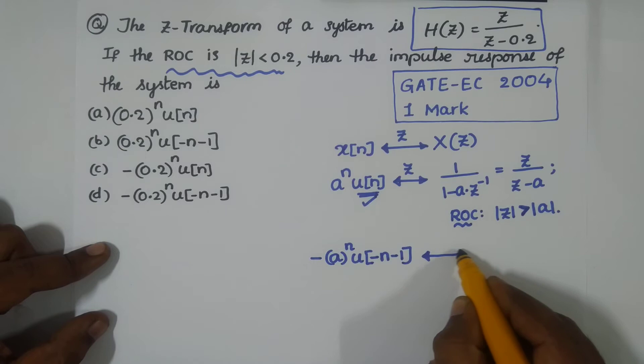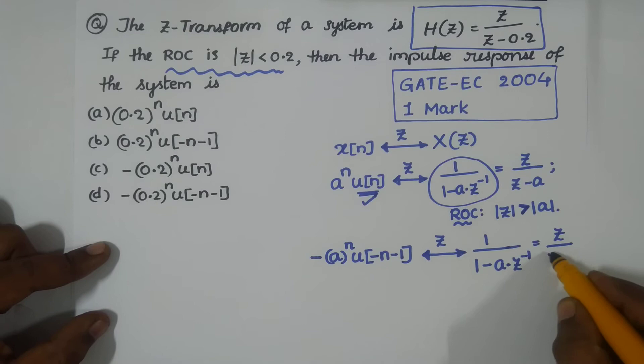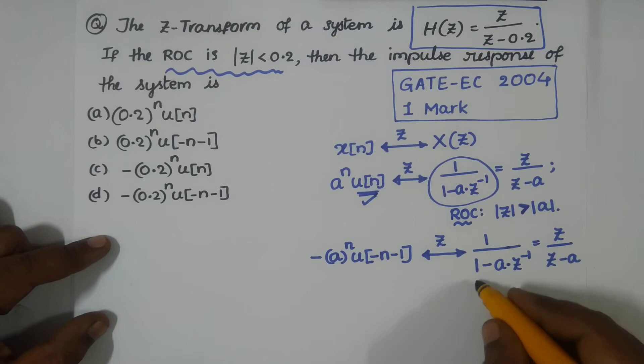1/(1 - a·z^(-1)). This could be again written as z/(z - a). But in this case, the region of convergence is |z| now less than |a|.